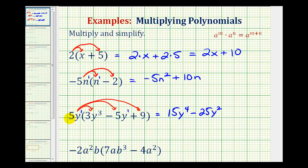In the last product, we have 5y times positive 9, that's 45y, so we have plus 45y.